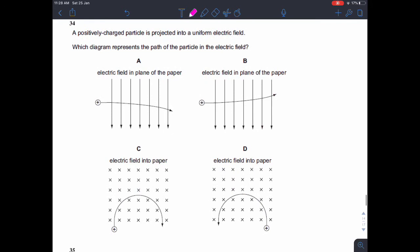Question 34. A positively charged particle is projected into a uniform electric field. Which diagram represents the path of a particle in the electric field? So first of all, it's an electric field.